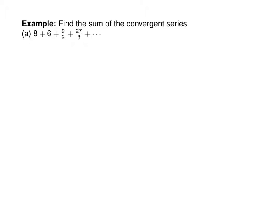In the next example we're given a list of numbers and we're supposed to first convert this into a summation. This one's a bit tricky. I began by writing it as 8 plus 2 times 3 plus 3 squared over 2 plus 3 to the 3 over 2 squared, and looking for an obvious pattern. Nothing immediately came out, but what I noticed is that something must be canceling.